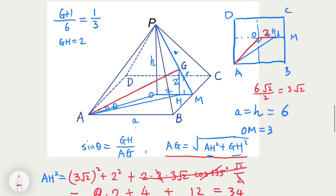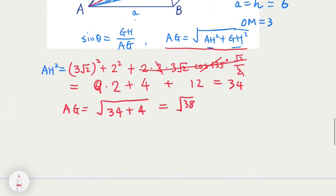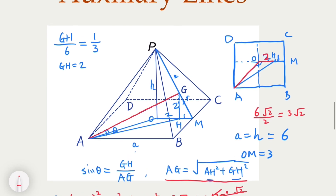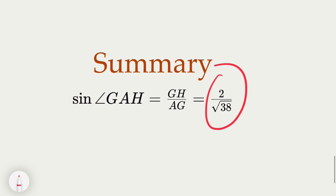So if we get the math right, the answer is sine theta equals 2 over the square root of 38. The two key parts of this problem are: first, make sure you understand the centroid point and the proportion of 1 to 2; and second, the projection relationships of the key points onto the base plane. If you got this answer, congratulations — you may be able to participate in some competitive math. Thank you.